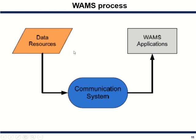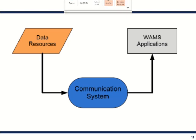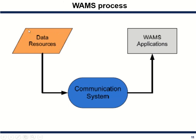Non-functional data includes events like flickers or faults occurring in the system. These are recorded but not used in real time; they are analyzed afterward for setting up a more secure power system. This data is communicated to the application part, where the application takes control of the power system. This is how the WAMS process occurs — data resources are collected through various equipment and communicated through various communication systems.